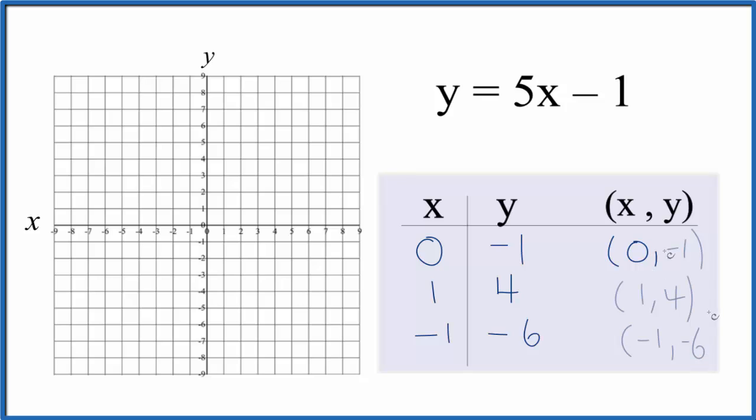So these are the points we'll graph for the linear equation y equals 5x minus 1. Our first point x is 0, y is negative 1. So that's right there. Then we have x is 1 and y is 4. 1, 2, 3, 4 right here.